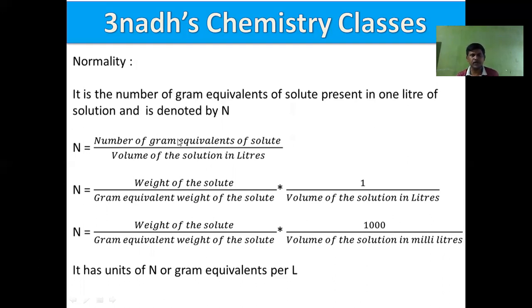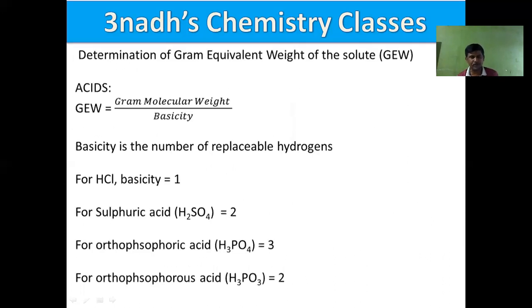We are already familiar with gram molecular weight. Now there is a new term: gram equivalent weight. The determination of gram equivalent weight depends on the nature of the solute — it varies from solute to solute. For acids, gram equivalent weight is given by gram molecular weight divided by basicity. Basicity is the number of replaceable hydrogens, meaning hydrogens attached to highly electronegative atoms such as oxygen or fluorine.